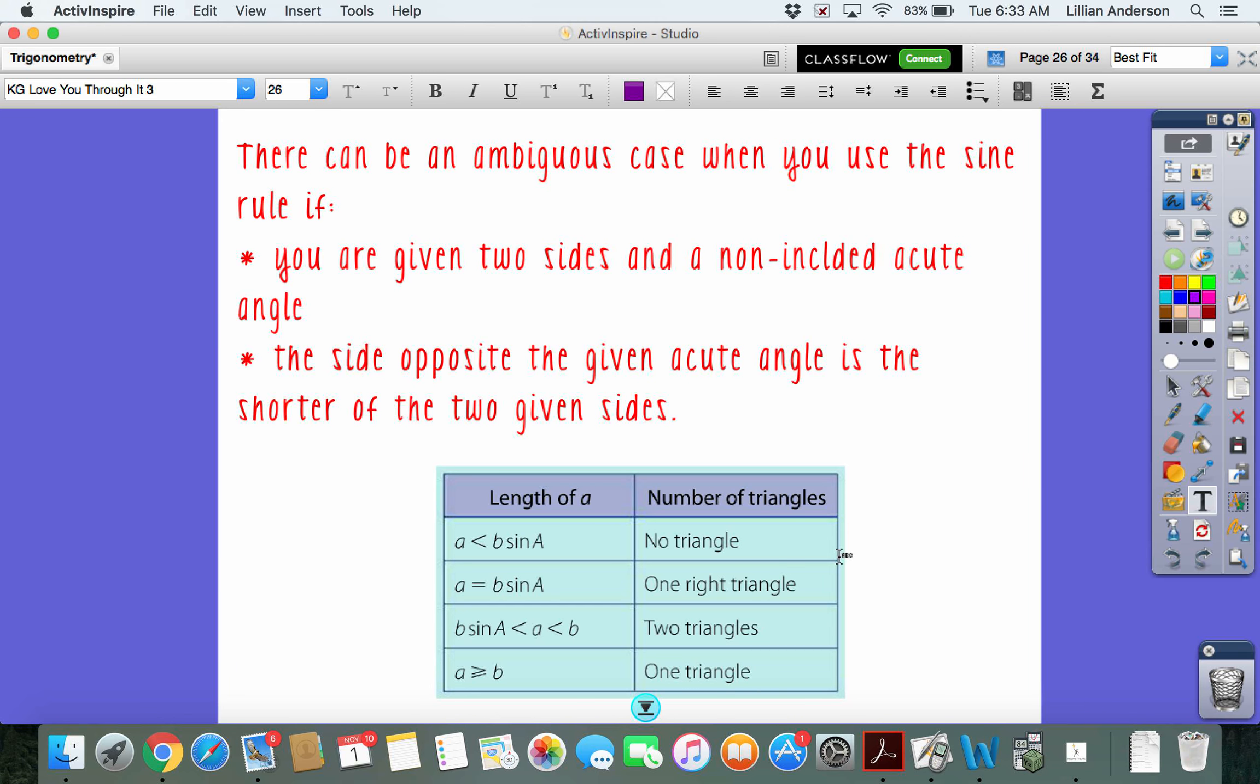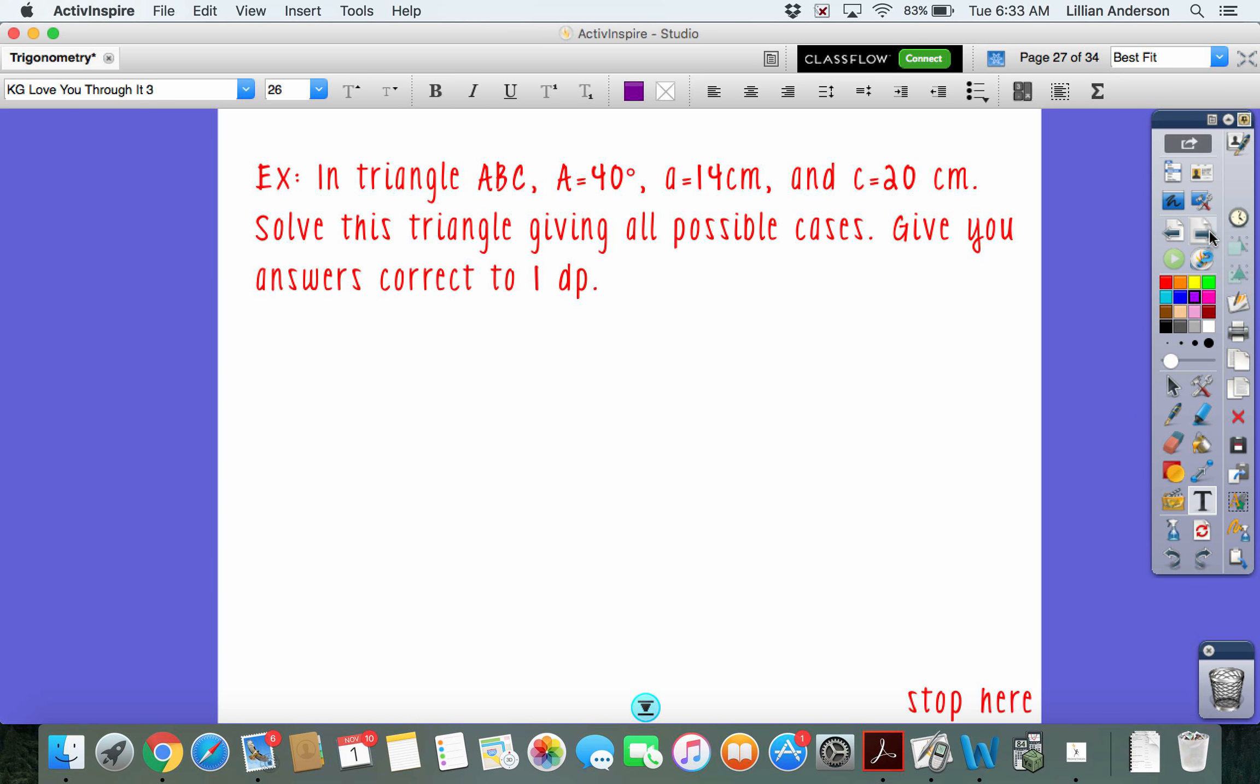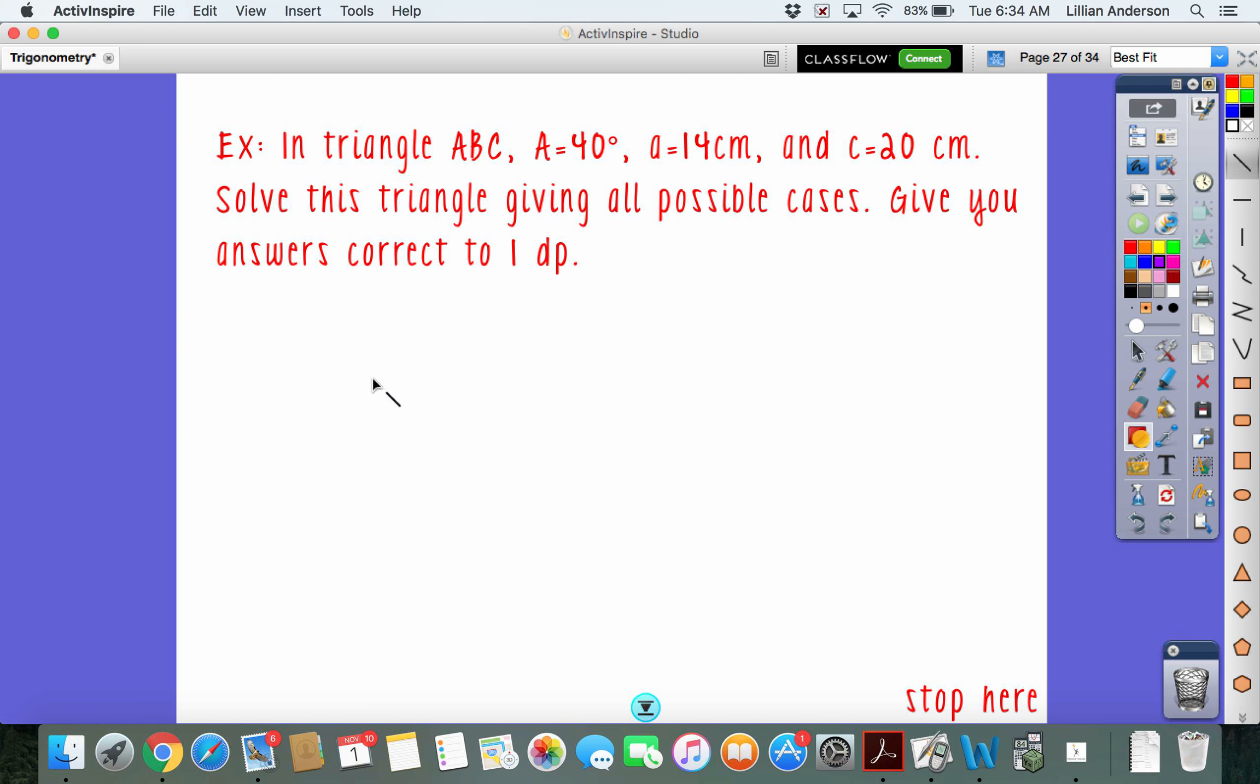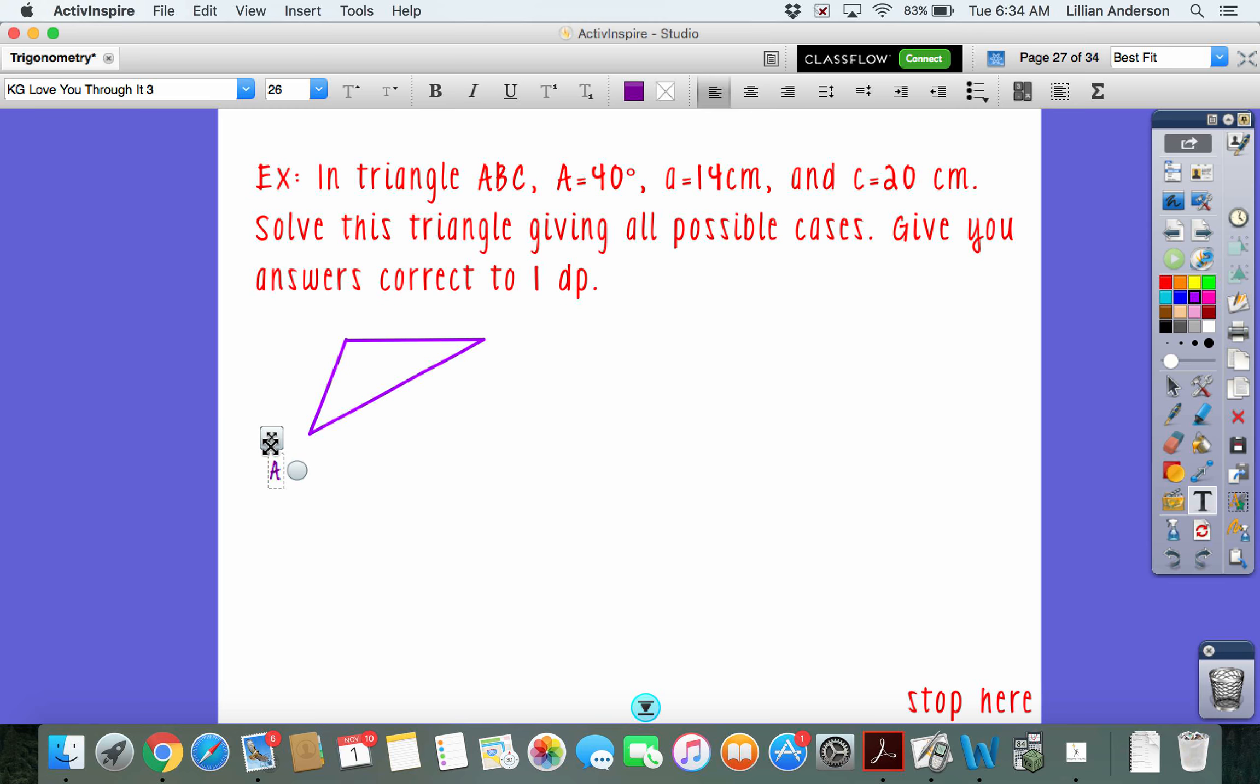Because sometimes it may look like it might just be one triangle, but in actuality, it might be more than one. So, we're going to look at this example. It says in triangle ABC, A is 40 degrees, a is 14, and c is 20. So, I'm going to do a quick sketch of this triangle. It doesn't have to be perfect.